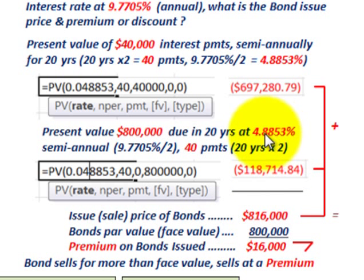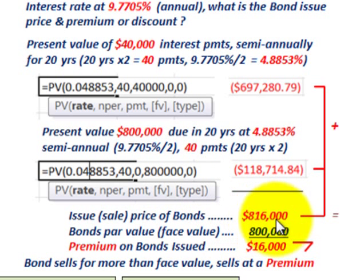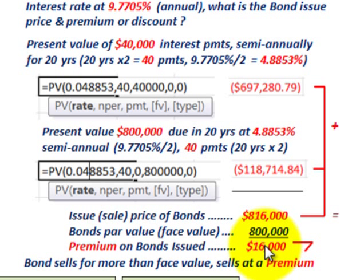Here we knew the effective interest rate, matched it for the periods, and discounted the maturity value correctly using 40 payments at the semi-annual rate. The sales price is $816,000, the bond par value is $800,000, and the difference is a premium of $16,000 — the bond sold for more than its face value.